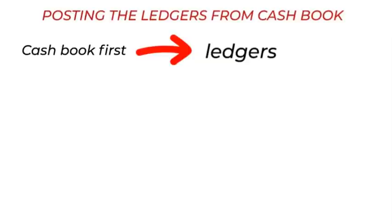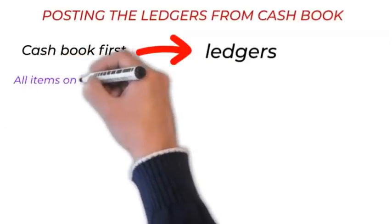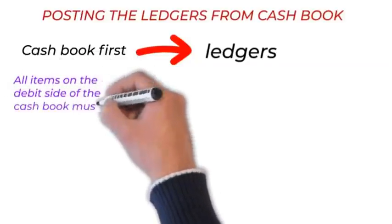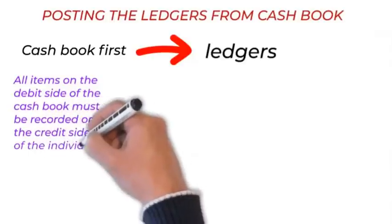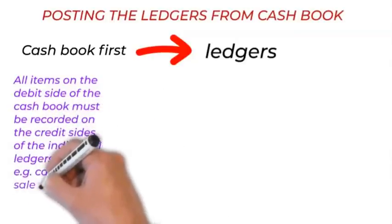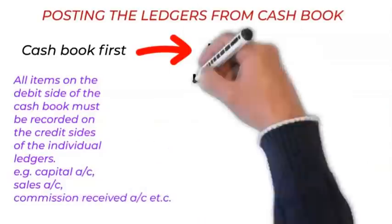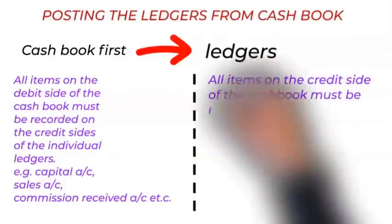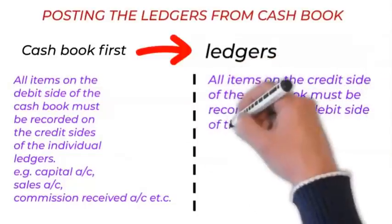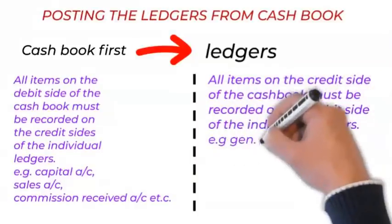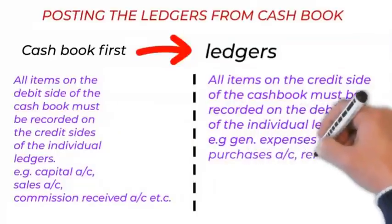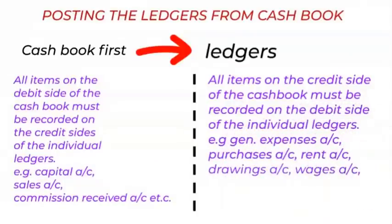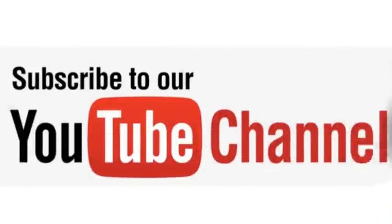The principle is simple. All items on the debit side of the cash book must be recorded on the credit sides of individual ledgers, such as capital, sales, commission received, rent received, etc. While those on the credit side of the cash book must be recorded on the debit side of the individual accounts, such as general expenses, purchases, rent paid, drawings, wages, stationery, etc. By now, you should be able to post transactions into the two-column cash book.